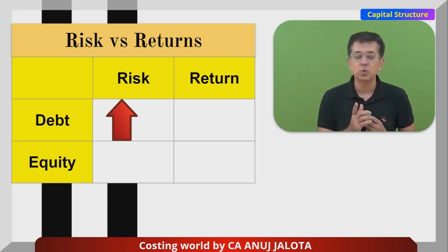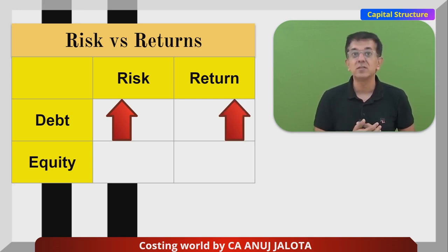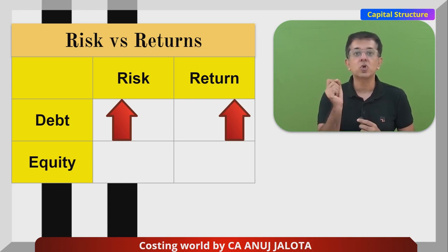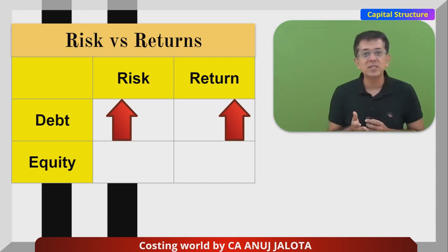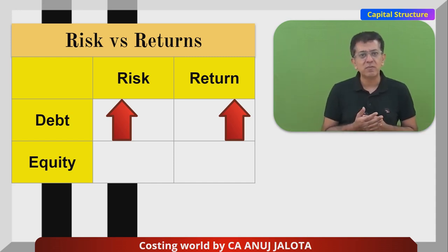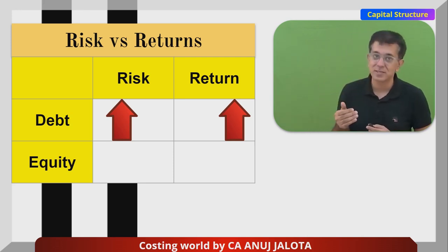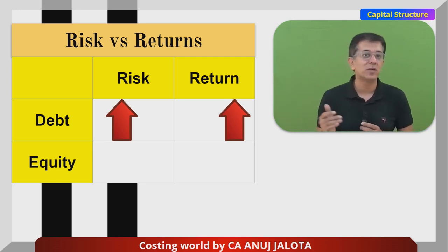Higher risk always leads to higher returns. Why higher returns? Because the cost of debt is cheaper — Kd is always cheaper than Ke. Why? Because debt holders have not taken any risk, so they will be paid a lower rate of interest compared to whatever equity shareholders will be getting.